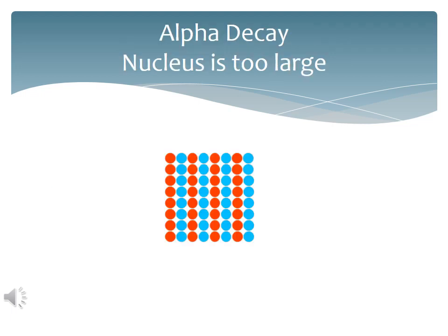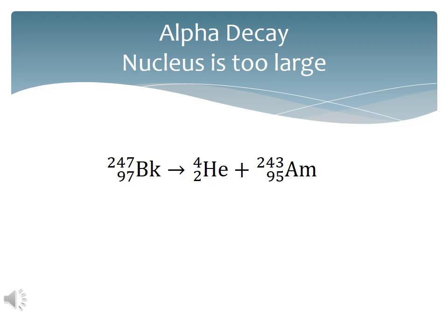Alpha decay occurs in elements with more than 83 protons. The long-range electrical repulsion overwhelms the short-range nuclear strong force attraction, and two protons and two neutrons are kicked out in the form of an alpha particle. Berkelium-247 undergoes alpha decay to generate the alpha particle, that is, the helium-4, and americium-243.